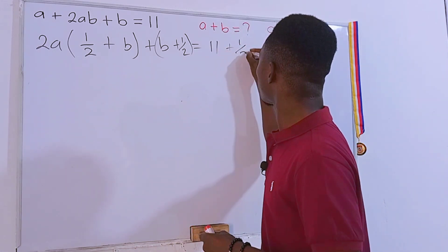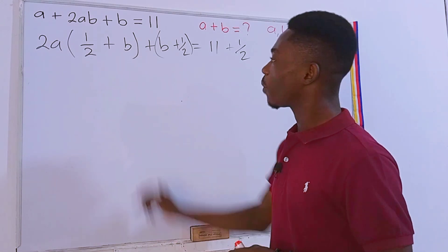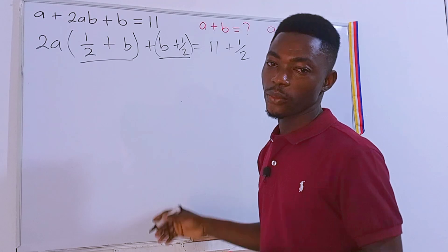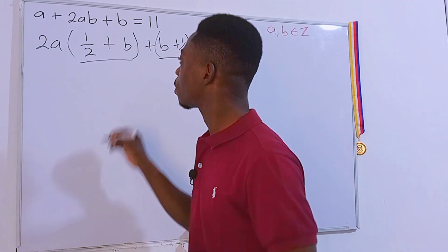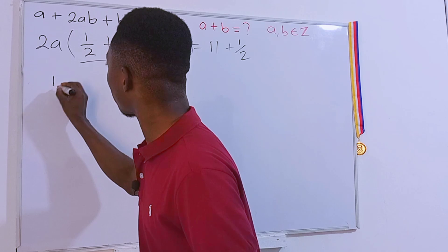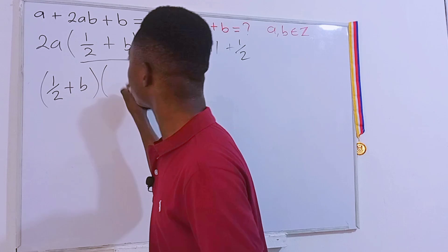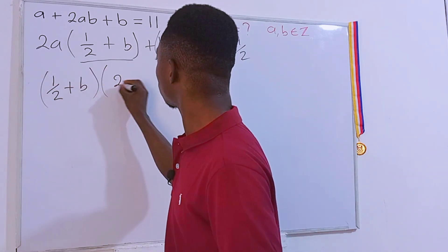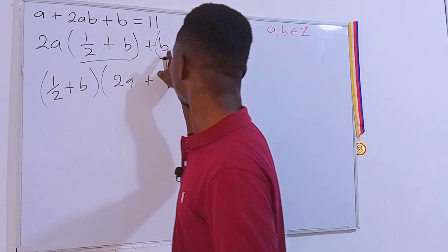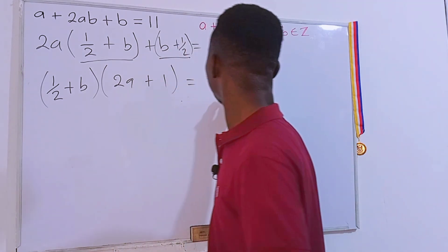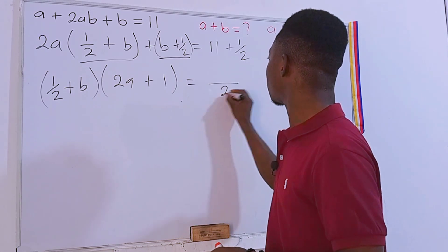Therefore, I'm gonna put 1/2 here as well. We can see that we have this here, we have this here, we can just factor it out so that we get (1/2 + b) times (2a + 1) = 11 + 1/2.